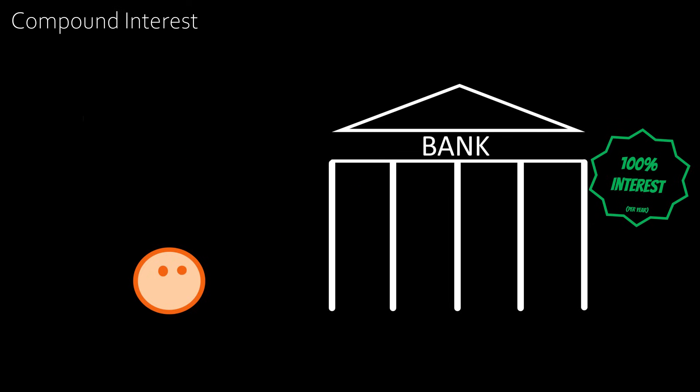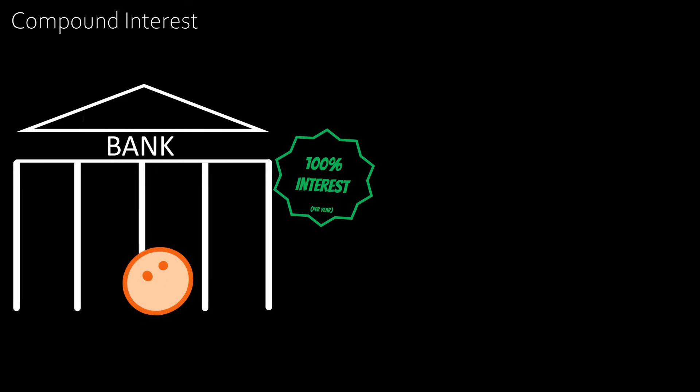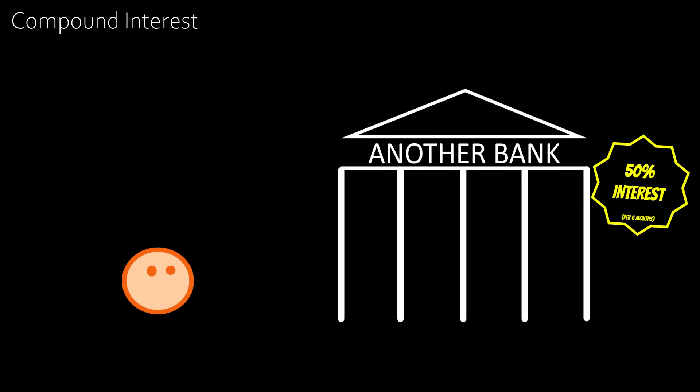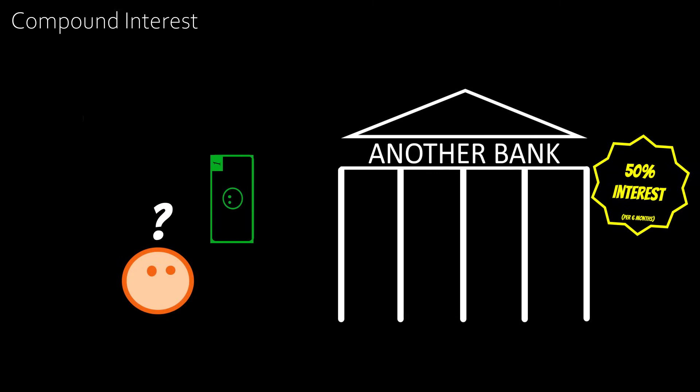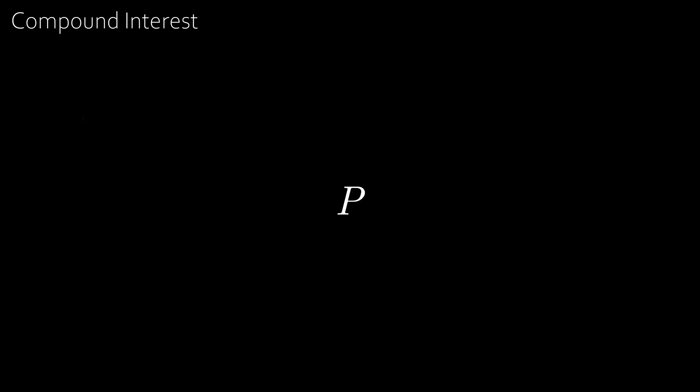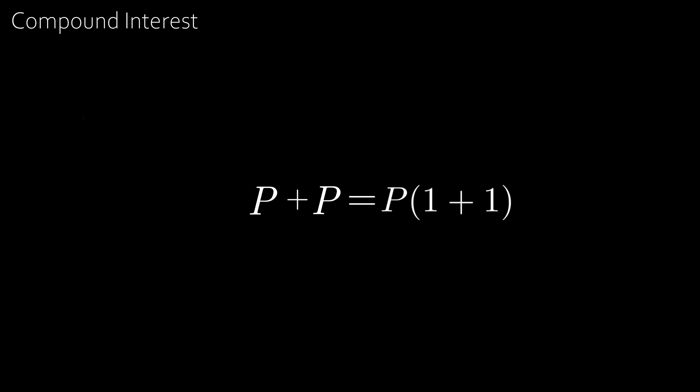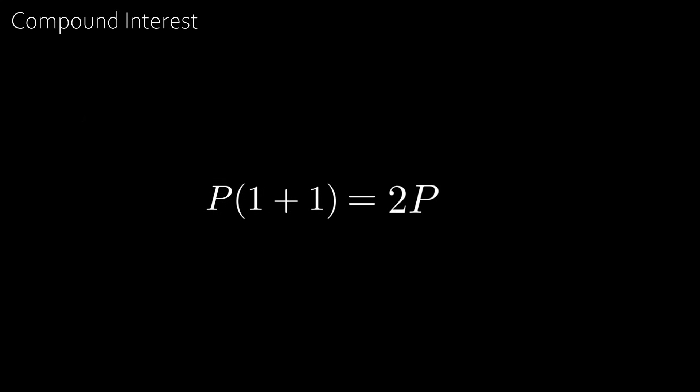Now say you go to another bank that instead gives you 50% interest every six months. Would it be better to put your money into this bank or the other bank? Let's calculate it. Say you had P amount of some currency. For a bank with 100% interest at the end of the year, you end up with P plus P, which factorises as P times (1 + 1), which is just 2P.